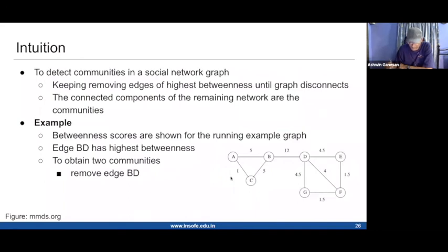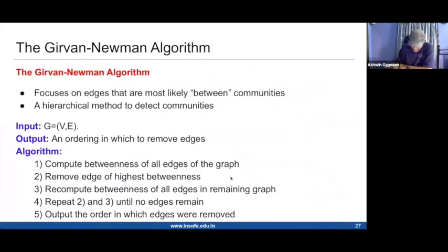That's the Girvan-Newman algorithm. You compute the betweenness of all the edges of a graph, remove the edge of highest betweenness, and then once you remove it, you're going to recompute the betweenness of all the edges in the remaining graph. You keep doing this until no further edges remain, and then you output the order in which the edges were removed. Every time you execute step two, you remove an edge, and the order in which you remove the edges is presented as output.